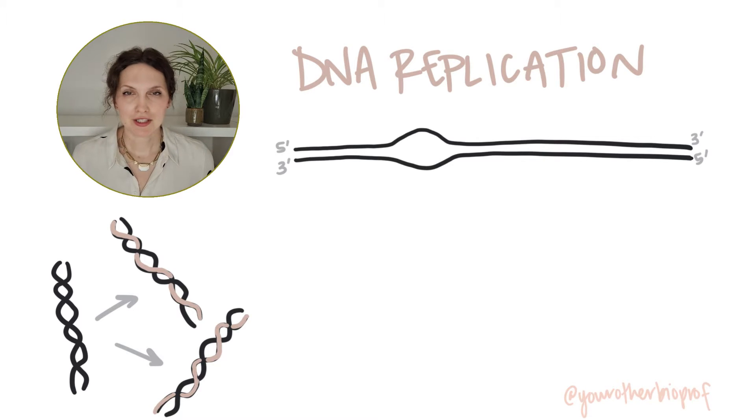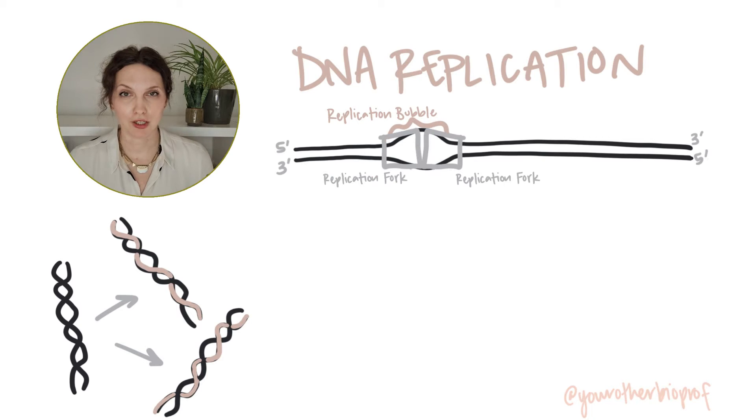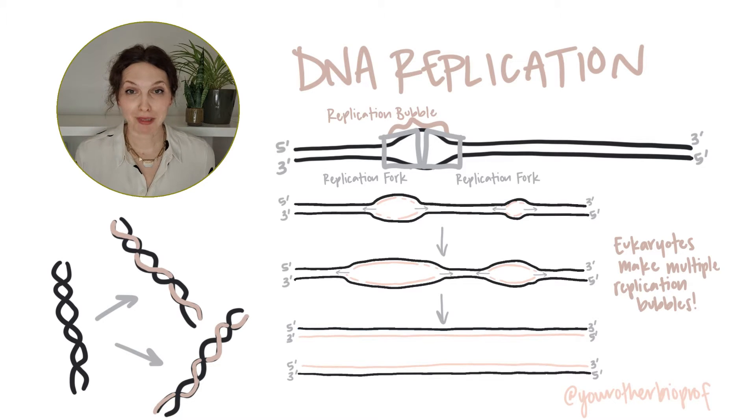These areas of single-stranded DNA are called replication bubbles. Now each replication bubble will have two replication forks, one on each side, and replication will occur in both directions into each of those two replication forks. When the replication forks meet up, replication is terminated, and all of our proteins, our replication machinery disassembles.